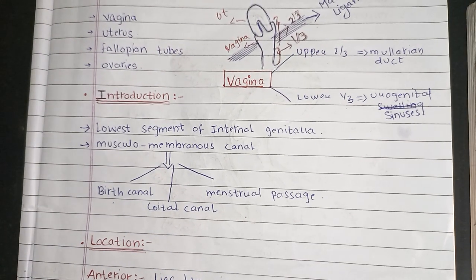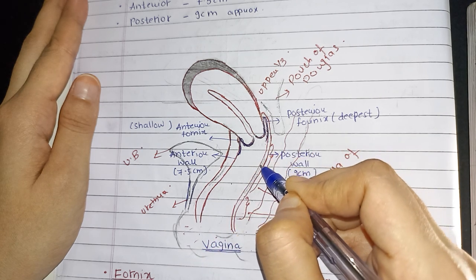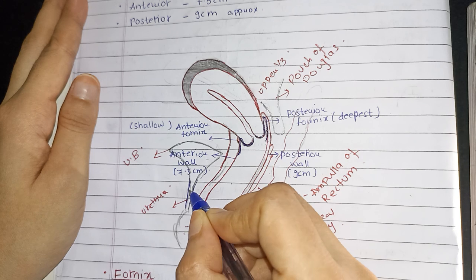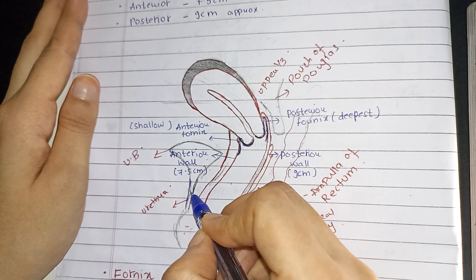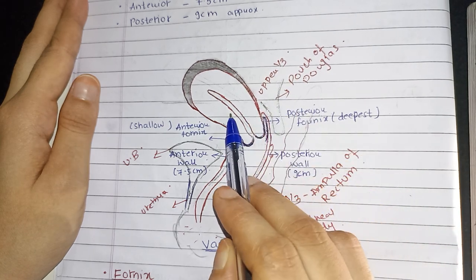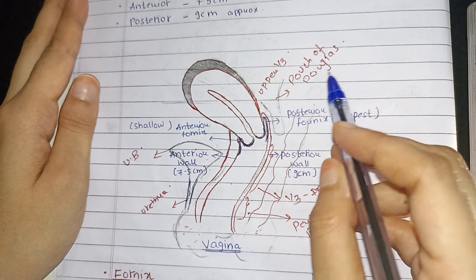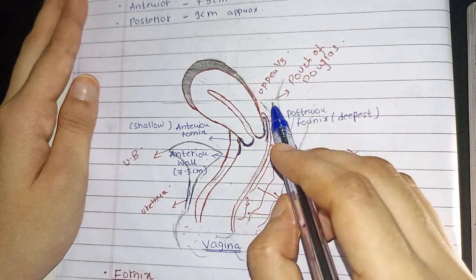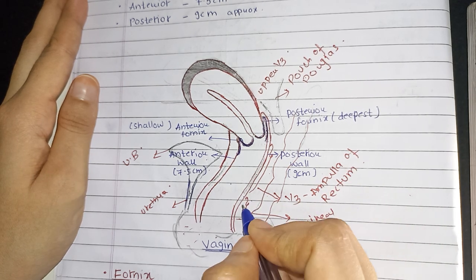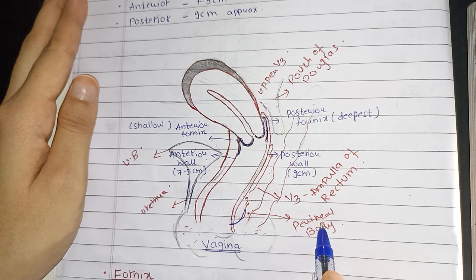Let's understand this with the help of a diagram. This is the uterus, this is vagina, this is the anterior wall of vagina, and this one is the posterior wall of the vagina. Anteriorly, it lies between the bladder and urethra. Posteriorly, it forms a pouch separating the uterus from the rectum — this is known as the pouch of Douglas or retro uterine pouch or cul-de-sac, situated on the upper one-third of the vagina. The middle one-third is in relation with the ampulla of rectum, and the lower one-third is in relation with the perineal body.